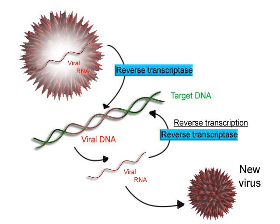Transcription is the first step of gene expression, in which a particular segment of DNA is copied into RNA by the enzyme RNA polymerase. Both DNA and RNA are nucleic acids, which use base pairs of nucleotides as a complementary language. During transcription, a DNA sequence is read by an RNA polymerase, which produces a complementary, antiparallel RNA strand called a primary transcript.